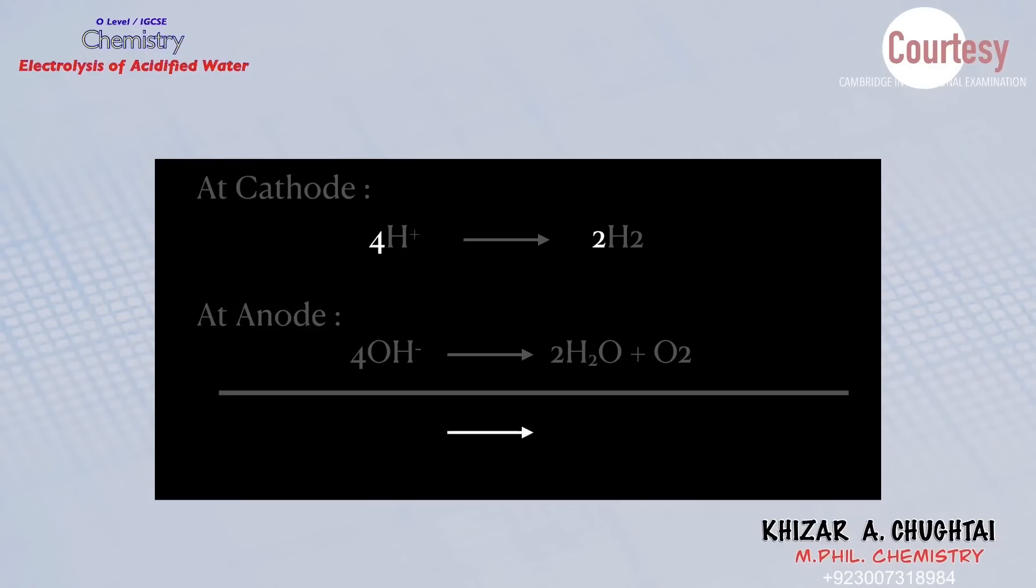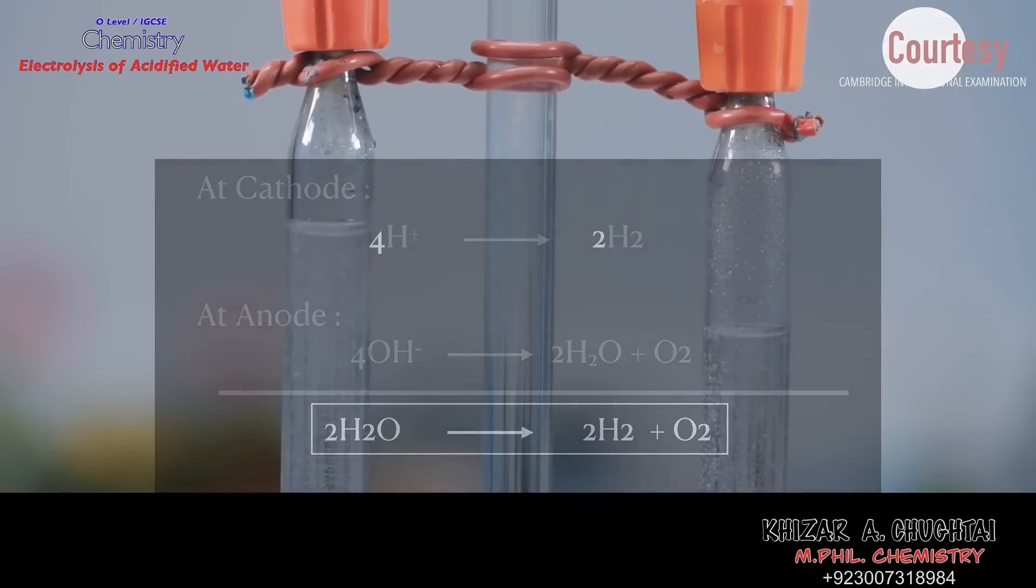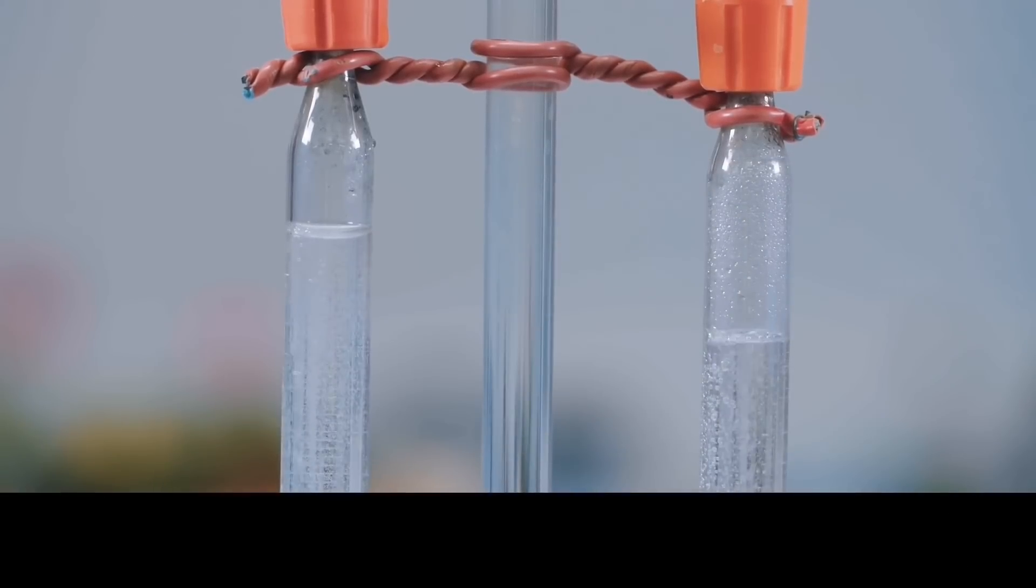So in this experiment water itself is being electrolyzed into hydrogen and oxygen, but acid molecules remained unchanged. So electricity can be used to decompose acidified water into its constituents.